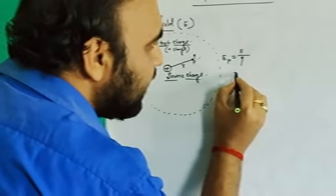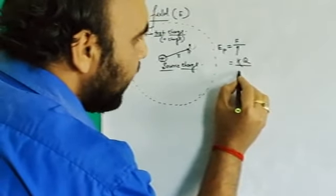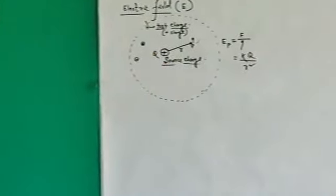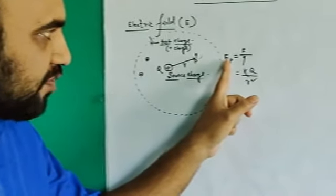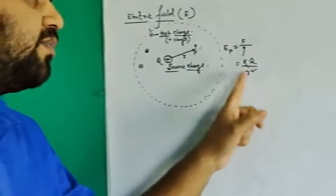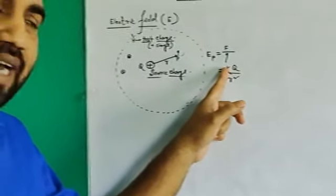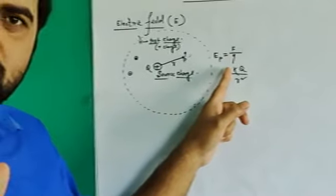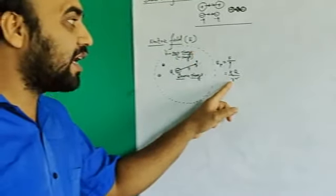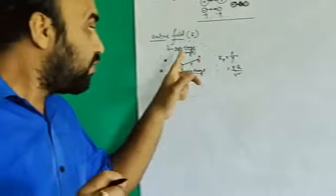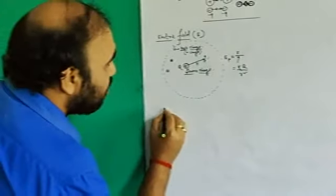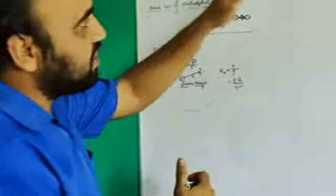This F/q can also be written as kQ/r², where Q is the source charge. So the equation of electric field at point P can be written as force per charge, or equivalently kQ/r², where k is a constant term you will learn about in class 12, Q is the source charge creating this electric field, and r is the distance of point P from the source charge.